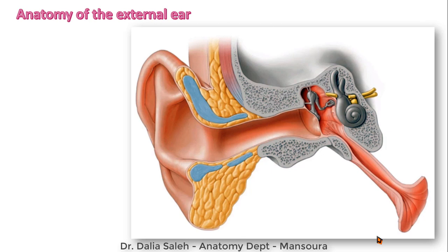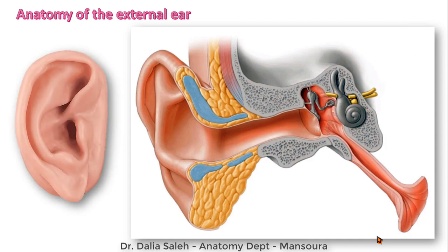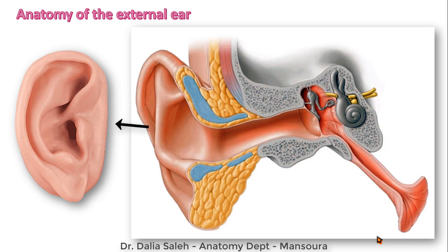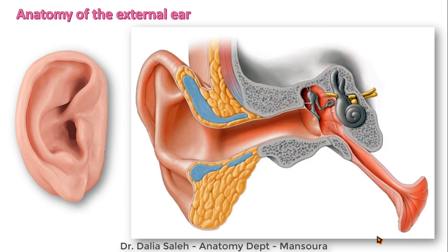This canal ends at the eardrum or the tympanic membrane, which separates the external ear from the middle ear. If we look at the ear pinna, it is a complicated structure made of the following areas: the helix — where we can see the tubercle — the antihelix, the tragus, the antitragus, the concha, the triangular fossa, and the ear lobule below, which is very soft because it's made of fat.